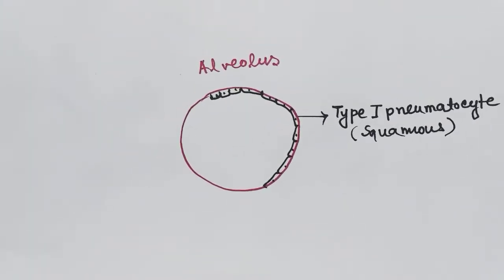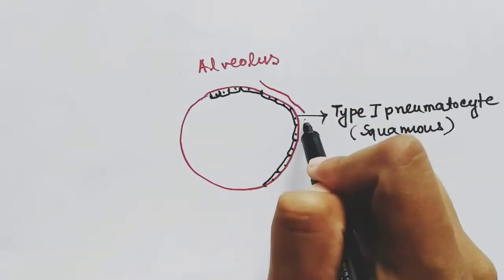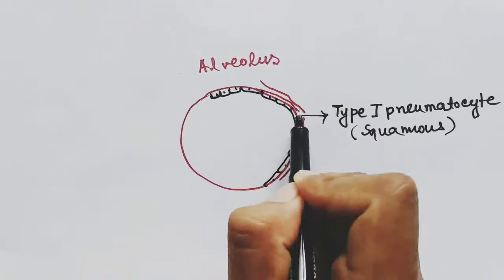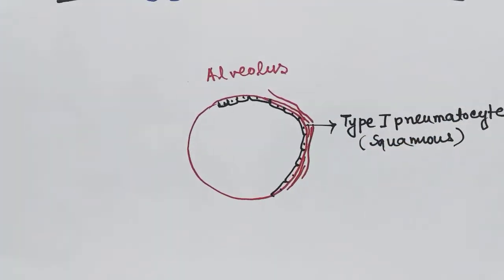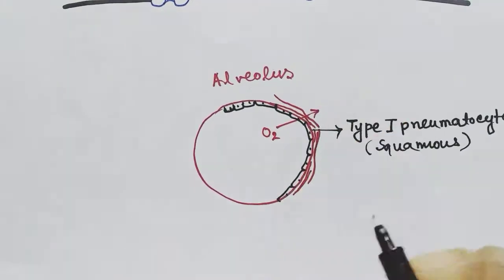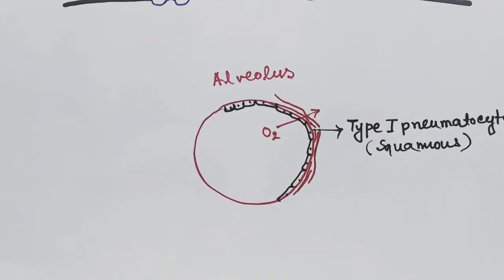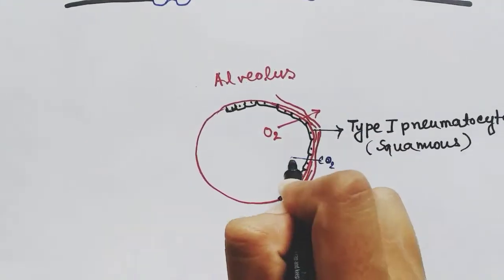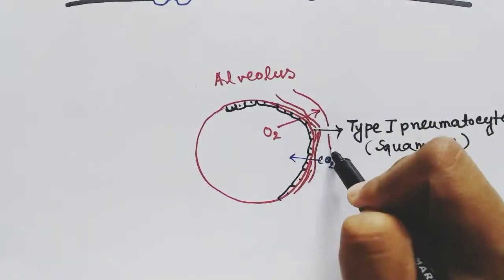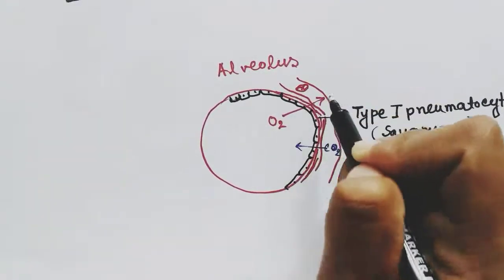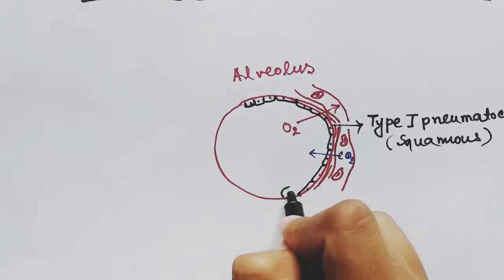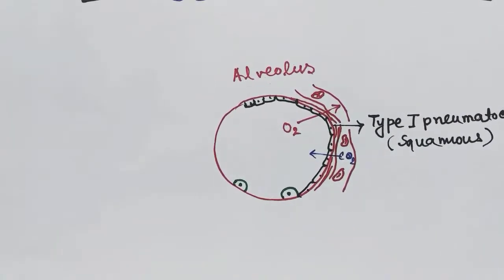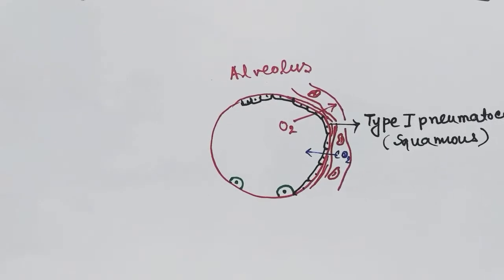The alveolus has blood vessels surrounding it, or the blood capillaries. The oxygen crosses the thin layer of squamous epithelial and goes to the blood, and carbon dioxide comes from the blood to the air of the alveolus. Other cells are also present, but type 1 pneumatocytes form 95% of the population.